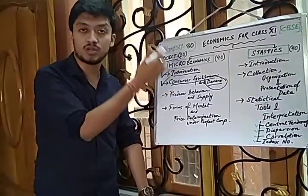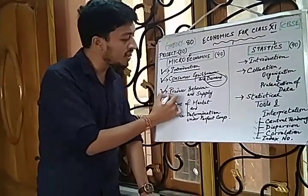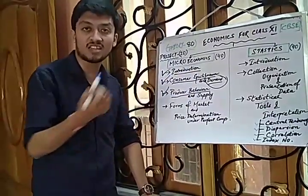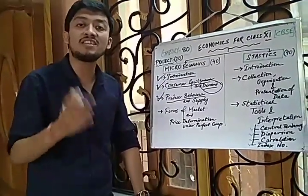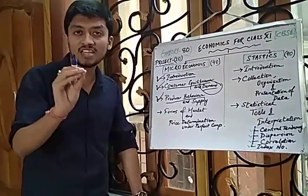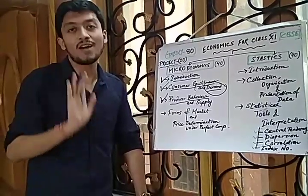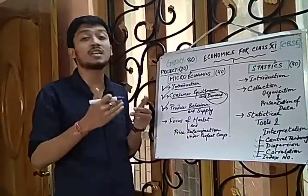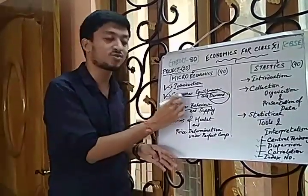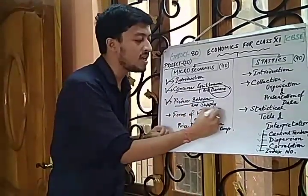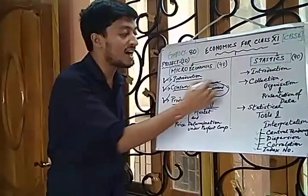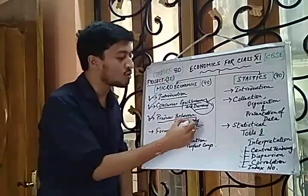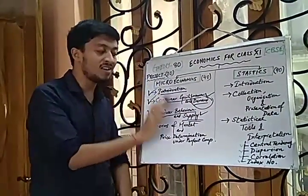After completing consumer equilibrium and demand, we move to the next part: producer behavior and supply. Producer behavior is about how a producer — another economic agent — behaves differently from a consumer. The producer's main objective is to yield profit, and how it keeps itself in an optimum or saturated situation is all about producer equilibrium. Supply is a separate topic, essentially the opposite of demand.